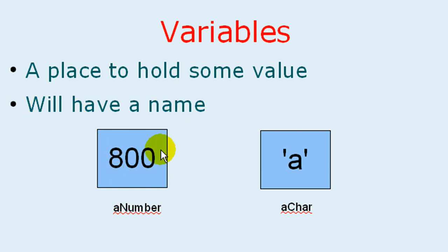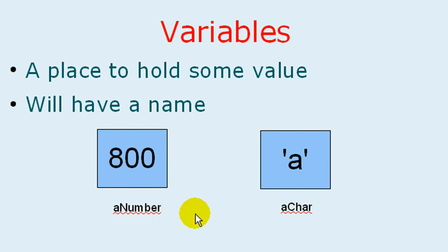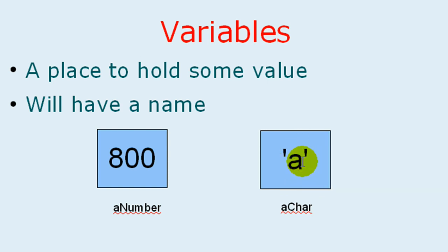They will have a name. In this example, this is kind of a box. Imagine the box having value 800 and its name is A number. Whenever you want to see what is there in this box, you would say, tell me what is there in A number, and you will be able to get that value. Similarly, another example is a char — another box where we are holding a character, which is 'A' enclosed in two single quotes.